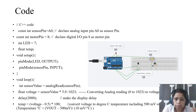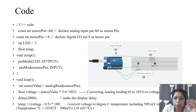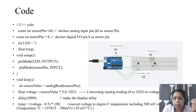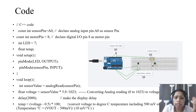Let's come to the Arduino code. The same diagram is placed here. The LED will be turned on or off — if temperature is less, LED will be turned off; if temperature is more, LED will be turned on. This LED will act as a digital LED.